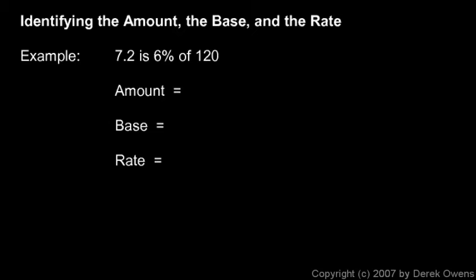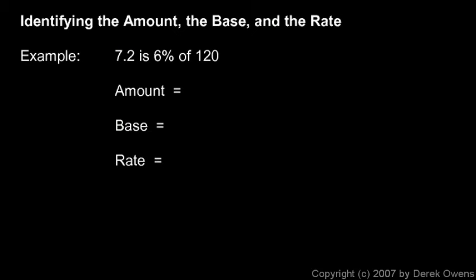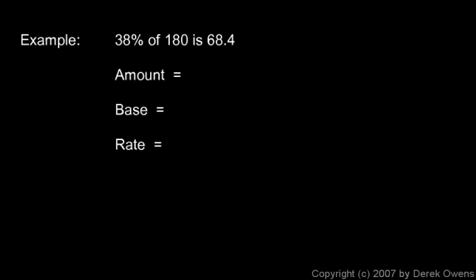Let's practice identifying those three things. Here's an example: 7.2 is 6% of 120. What is the amount? The amount is the fraction of the whole — 7.2 is part of 120, so the amount is 7.2. The base is the whole, and notice the base is often preceded by the word 'of,' so the base is 120. The rate is the percentage — you can see the percent sign — so the rate is 6%.